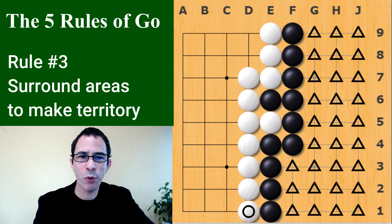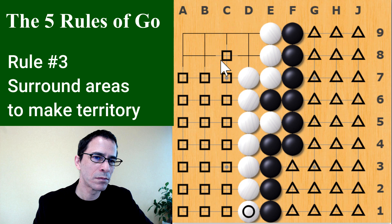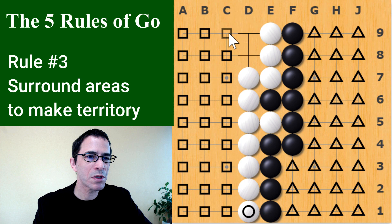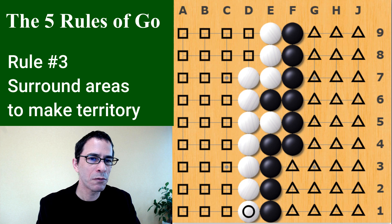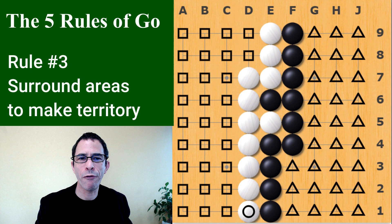Now let's count the white points — that was 27 points, 3 times 9 also. So white has 29 points. That's 29 for white versus 30 for black, so black wins by one point. Territory is counted as open spaces you have surrounded; it usually happens after you finish the game.